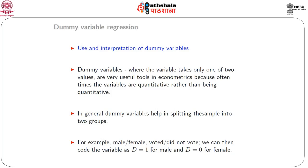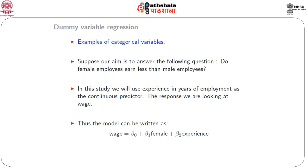In such cases, we code our dummy variable accordingly. For example, if the dummy variable is denoted by D, we have D equals 1 for male and 0 for female, or D equals 1 for individuals who have voted and 0 for those who have not. Suppose our aim is to answer: do female employees earn less than male employees? We will use years of experience as a continuous predictor variable in addition to the dummy variable.